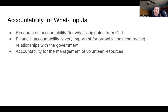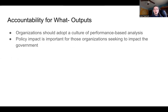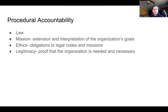Research on accountability for what originates from an author called Cut. Financial accountability is very important for organizations in contracting relationships with the government. Accountability for the management of volunteer resources is also extremely important. Organizations should adopt a culture of performance-based analysis regarding outputs. Policy impact is important for organizations seeking to influence government. Procedural accountability includes law, mission — the extension and interpretation of the organization's goals — ethics, which are obligations to legal codes and missions, and legitimacy, which is proof that the organization is needed and necessary.